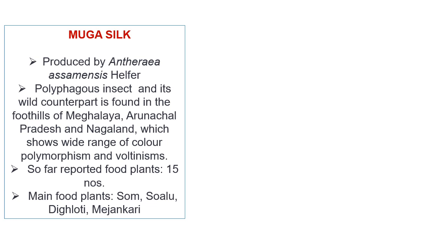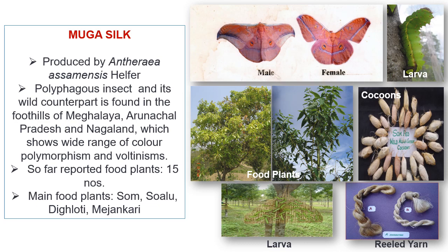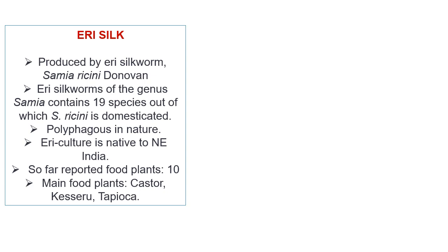Muga silk: the silk produced by Antheraea assamensis Helfer is popularly known as muga silk. The silkworm is polyphagous in nature and its wild counterpart is found in the foothills of Meghalaya, Arunachal Pradesh, and Nagaland, showing a wide range of color morphism and voltinism. So far, 15 food plants are reported; the main ones are Som, Soalu, Digloti, and Mejankari. Shown are the muga silkworm adult (male and female), larva, food plants, cocoons, mass rearing, and reeled silk yarn.